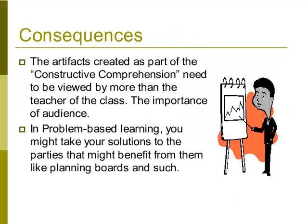The last C is consequences. The artifacts created as part of constructive comprehension need to be viewed by more than just the teacher — there needs to be a greater consequence. They need to be publishing on the web, presenting to planning boards, or working with a client they then present to. You need some greater consequence than just turning it in for the teacher to grade.